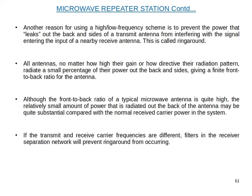Another reason for using a high-low frequency scheme is to prevent the power that leaks out the back and sides of a transmitter antenna from interfering with the signal entering the input of a nearby receiver antenna. This is called ring-around. All antennas, no matter how high their gain or how directive their radiation pattern, radiate a small percentage of their power out the back and sides, giving a finite front-to-back ratio.